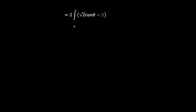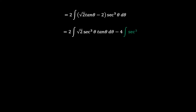Going forward, we have 2 times the integral of (√2 tan θ minus 2) times sec³ θ. Expanding, we have √2 times the integral of sec³ θ tan θ, and then 2 times 2 gives us minus 4 times the integral of sec³ θ.